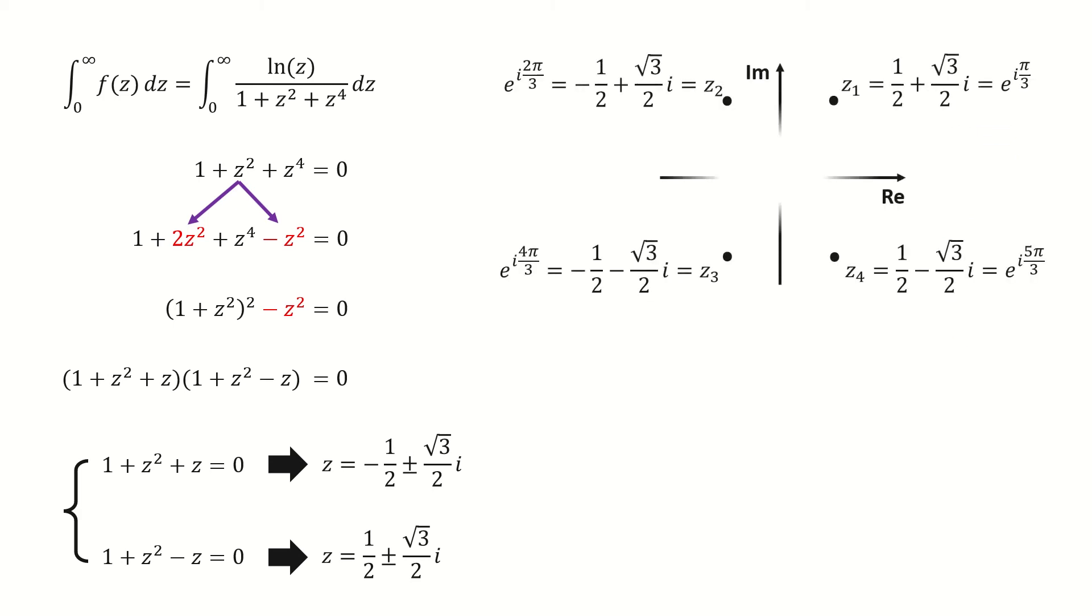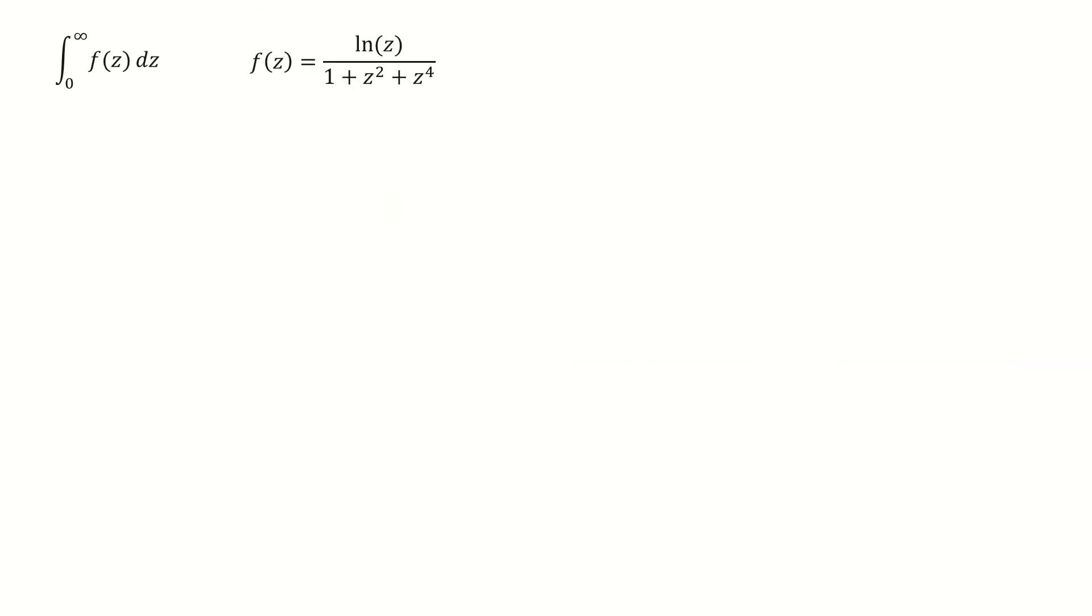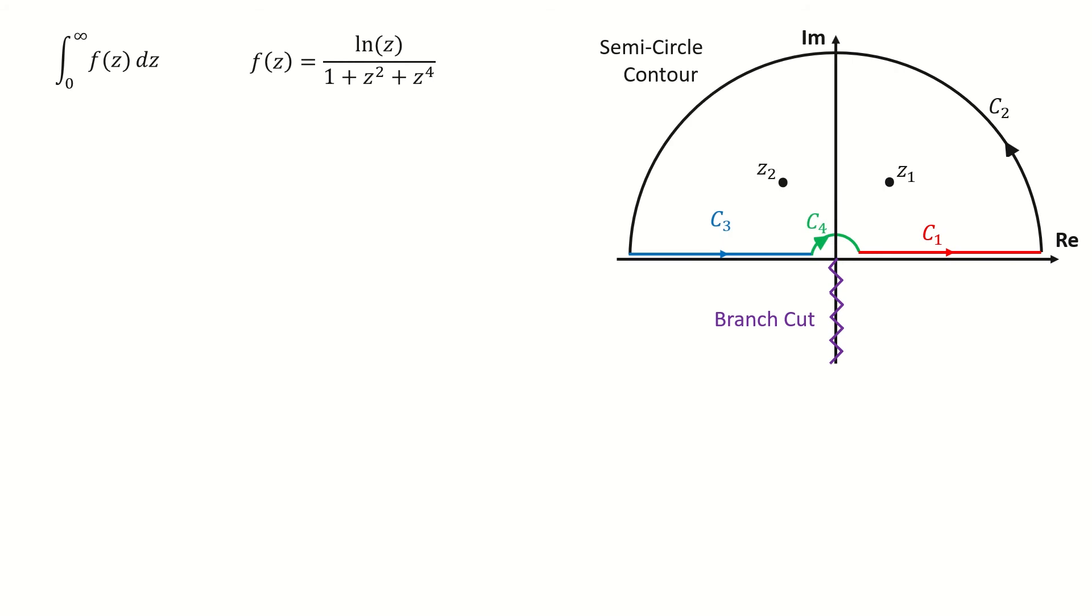We mark them on the complex plane, so the denominator can be written into this form. Here is the new method. First, we draw the semicircle contour here, and then we take the branch cut on the negative imaginary axis. In this case,